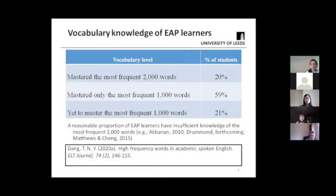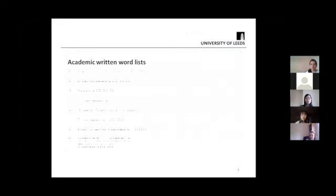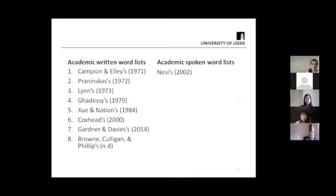I also looked for resources out there to support students with academic vocabularies — what resources exist to help them deal with vocabulary in academic spoken English. I found there are a lot of resources to support them with vocabulary in academic written English, but not much for vocabulary in academic spoken English. Taking academic word lists as an example, there are long histories of creating academic written word lists, but when we think about academic spoken word lists, by the time I did my study there was only one word list available, and it was not available for the public to use. So it is fair to say there was no academic spoken word list available at that time.